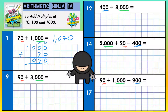Zero add zero is zero, zero add seven is seven, zero adds nothing is nothing, and one add nothing is one — so your answer is 1070. The next one: 90 plus 3000. If you read it the other way around with the bigger number first, 3000 plus 90, it's almost telling you what the answer is.